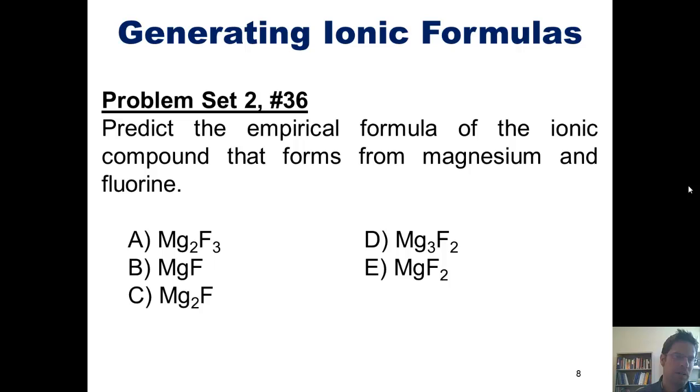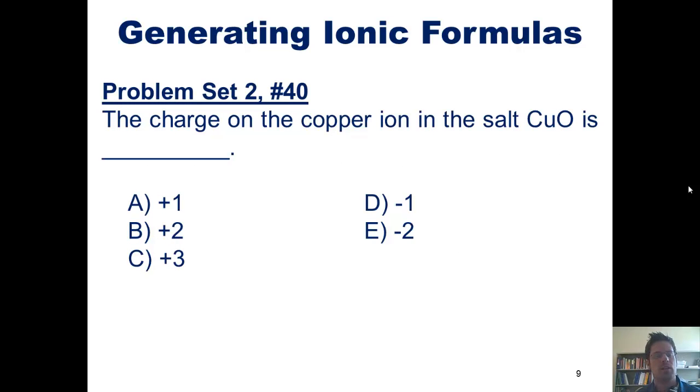So let's see if you can do this problem on your own. Predict the empirical formula of the ionic compound that forms from magnesium and fluorine. And here's another one. The charge on the copper ion in the salt, CuO, is what?